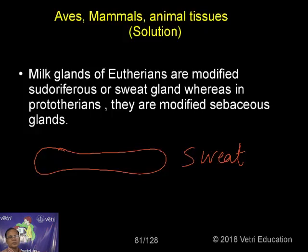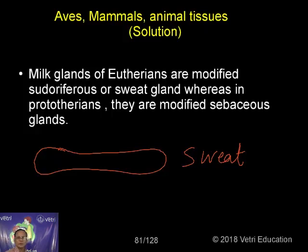If you take the prototherians — the egg-laying mammals — the origin is different. In all mammals, mammary glands are present and are modified sweat glands or pseudoriferous glands. But in the case of prototherians, the monotremes, including the duckbill platypus, the mammary glands are modified sebaceous glands — remember that distinction.